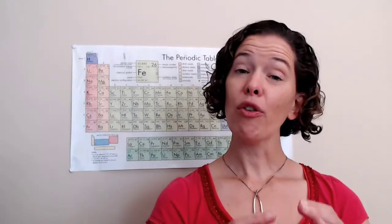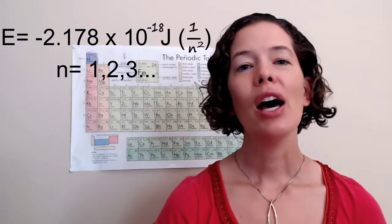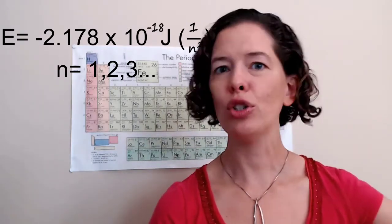Each orbital has a different energy, and the farther away you get from the nucleus the greater energy that orbital has. Now we have an equation where we can actually calculate the energy of the orbital. So N starts at one and it counts up to infinity.